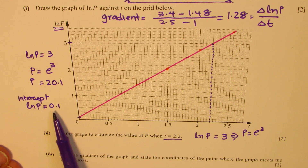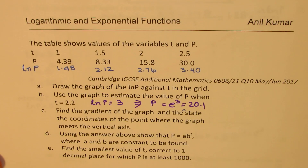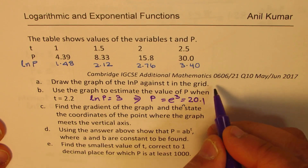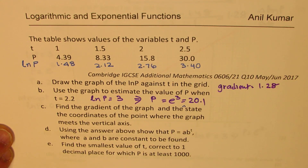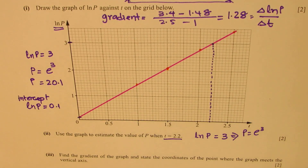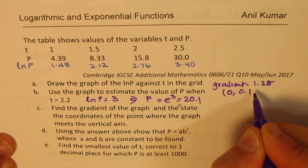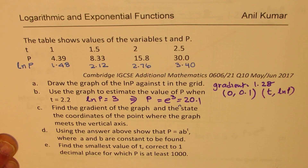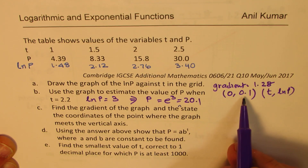The intercept for ln(P) is 0.1. So we get gradient = 1.28, and the graph meets the vertical axis at the point (0, 0.1) — that is, at T=0, ln(P) = 0.1.